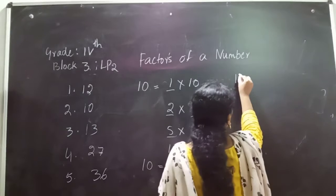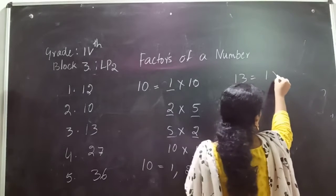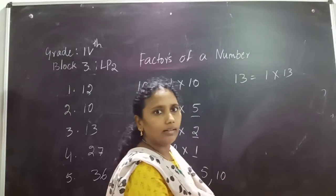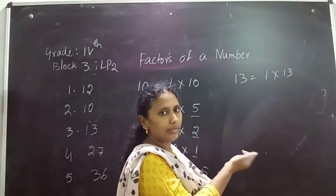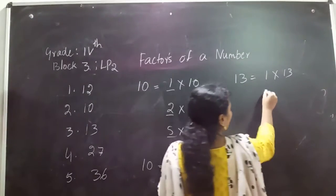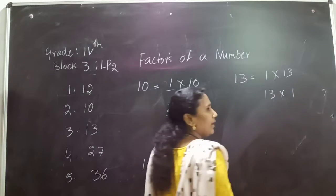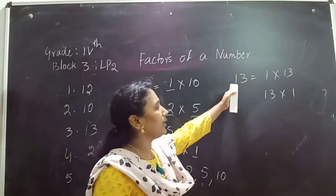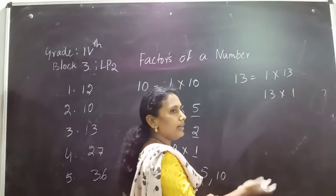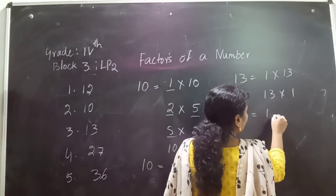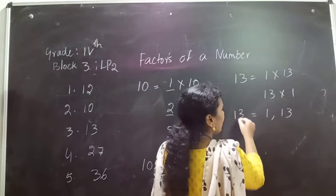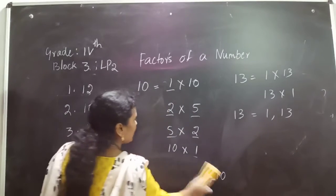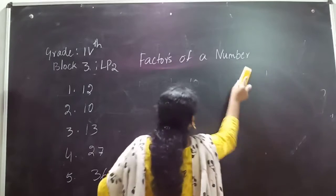Now go for the number 30. 1 times 30 is 30. For 2: 2 times 6 is 12, not 30. For 3: 3 times 6 is 18, 3 times 5 is 15, not there. So only 1 times 30 and 30 times 1. If you multiply any two numbers, you have to get 30. The factors of 30 are 1 and 30. Only these two numbers are the factors for the number 30.